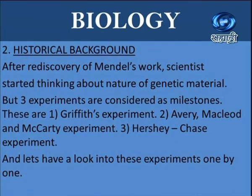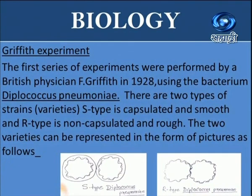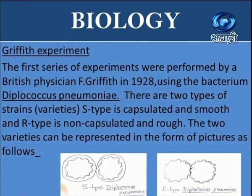The first experiment to consider is Griffith's experiment. The first series of experiments were performed by a British physician F. Griffith in 1928 using the bacterium Diplococcus pneumoniae. There are two types of strains: S-type, which is capsulated and smooth, and R-type, which is non-capsulated and rough.